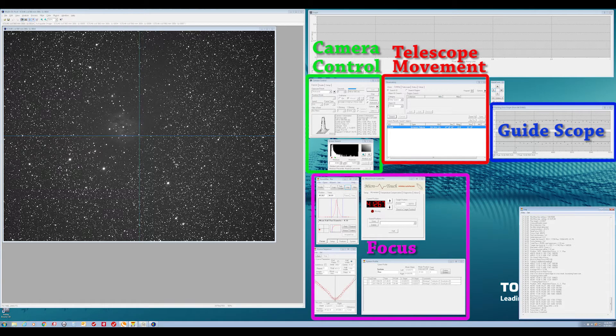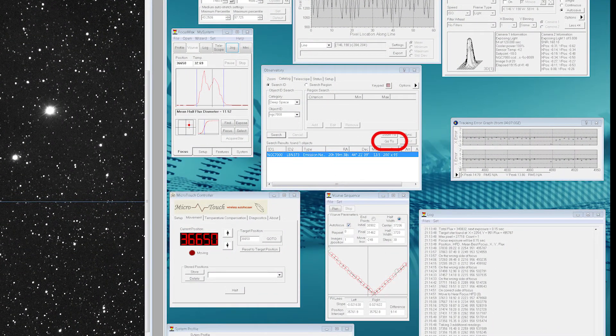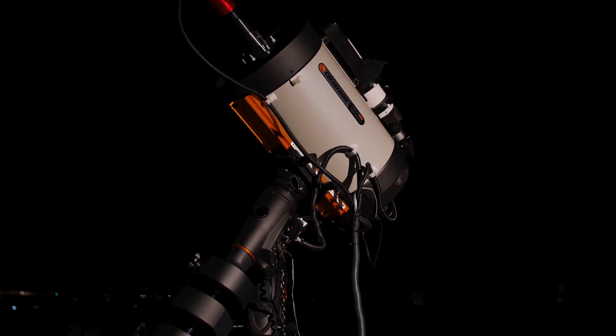The first step is to select the target by searching in the observatory window and click on the Go To button. The telescope slews to the target and test exposures are done to confirm the correct position.